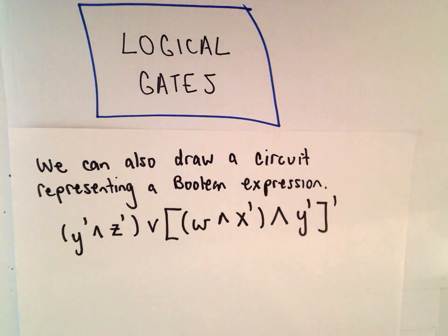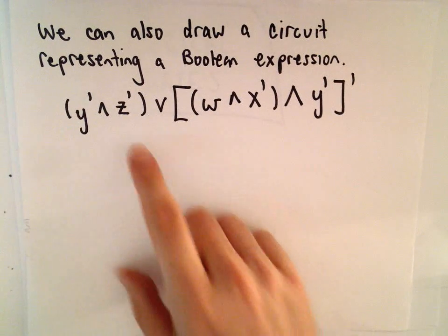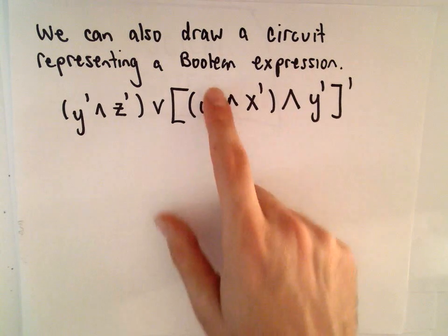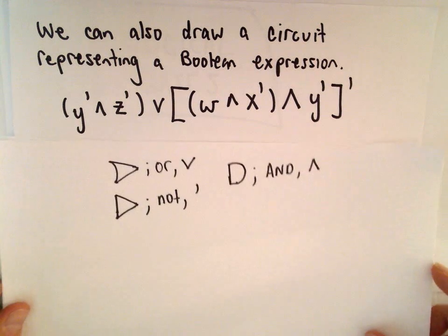Okay, here we're going to look at another example involving logical gates, and what I'm going to do in this case is draw a circuit representing a Boolean expression. Converting back and forth between Boolean expressions and circuits is something that's very useful. So the notation I'm going to use...